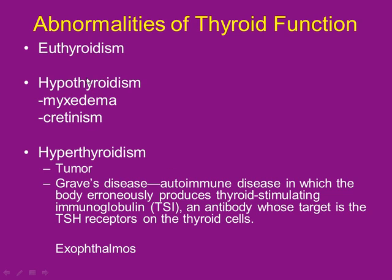Next section: abnormalities. Euthyroidism is normal levels of thyroid hormone — not an abnormality. Hypothyroidism means thyroid hormone is low. Primary hypothyroidism means the thyroid itself is broken. Secondary could be anything else, but the first two things to look at are the anterior pituitary and the hypothalamus.